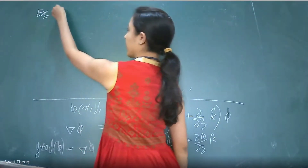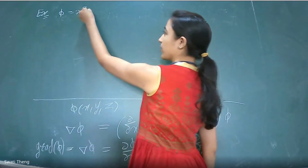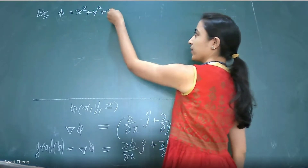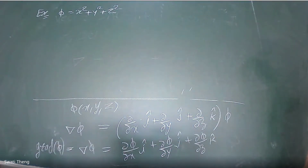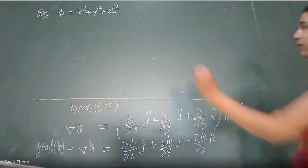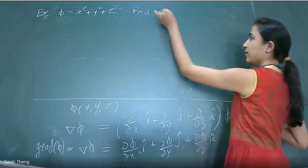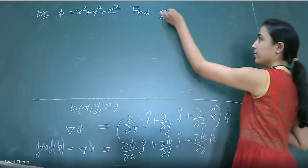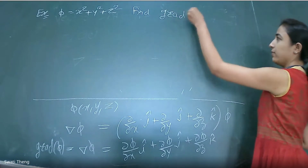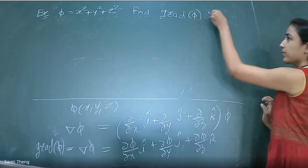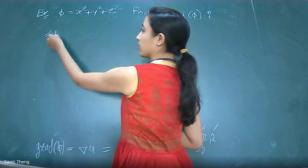We have given φ = x² + y² + z². Find grad φ. What will we do in the solution?